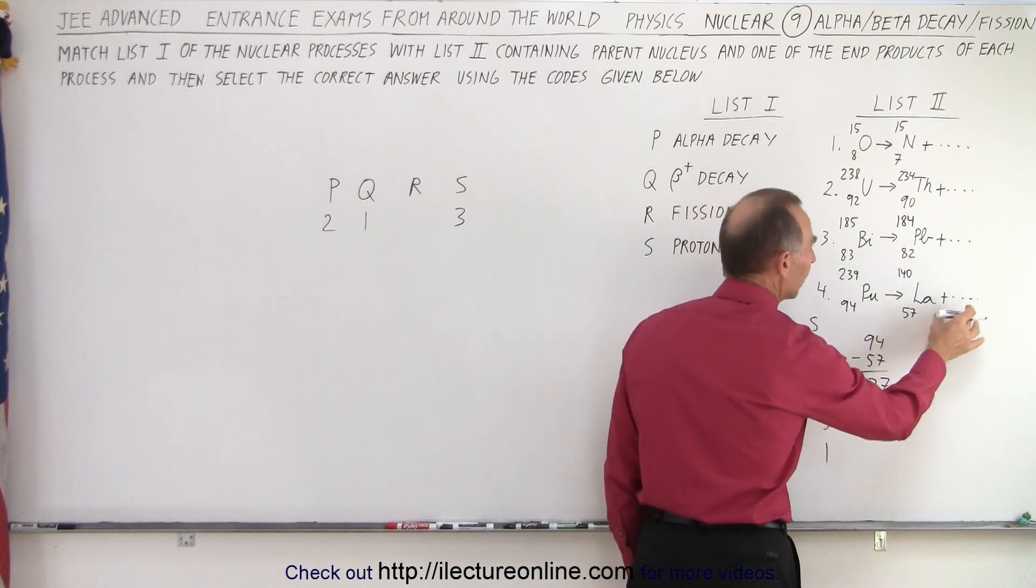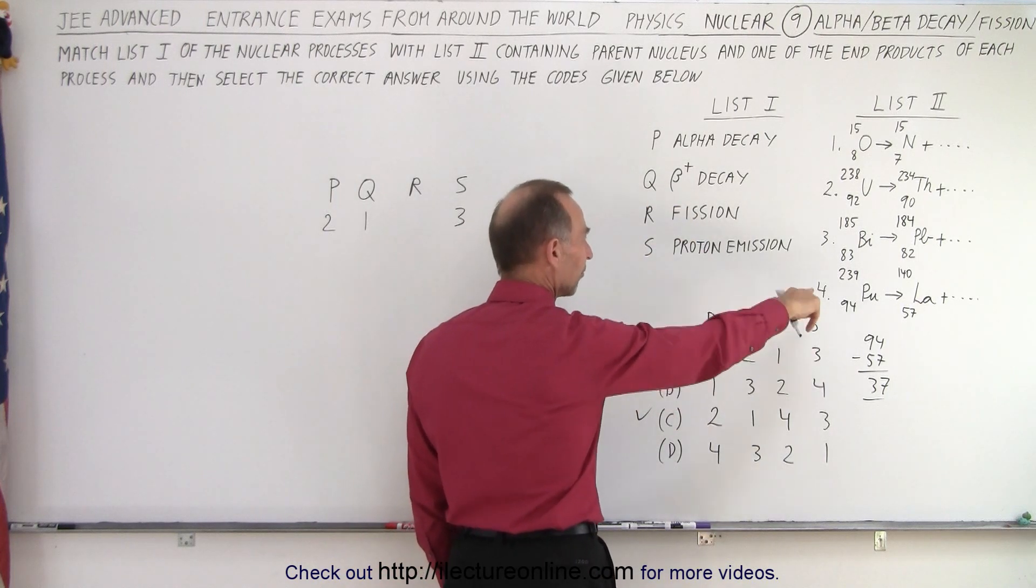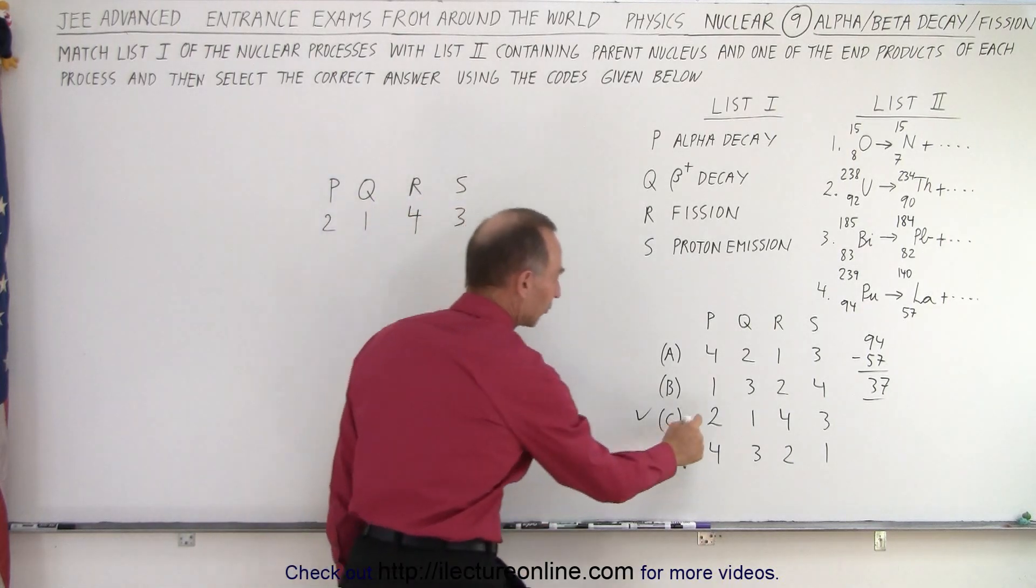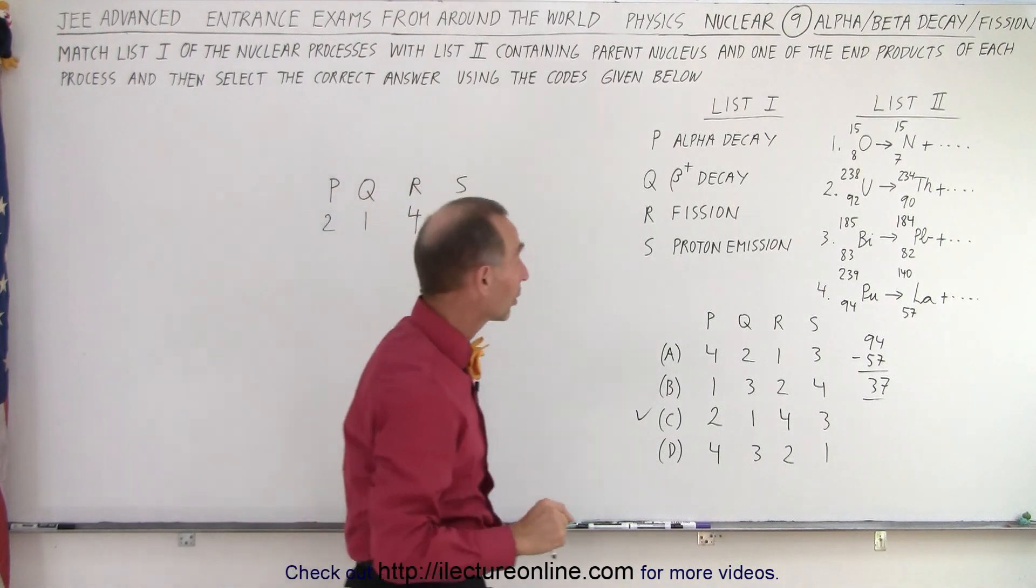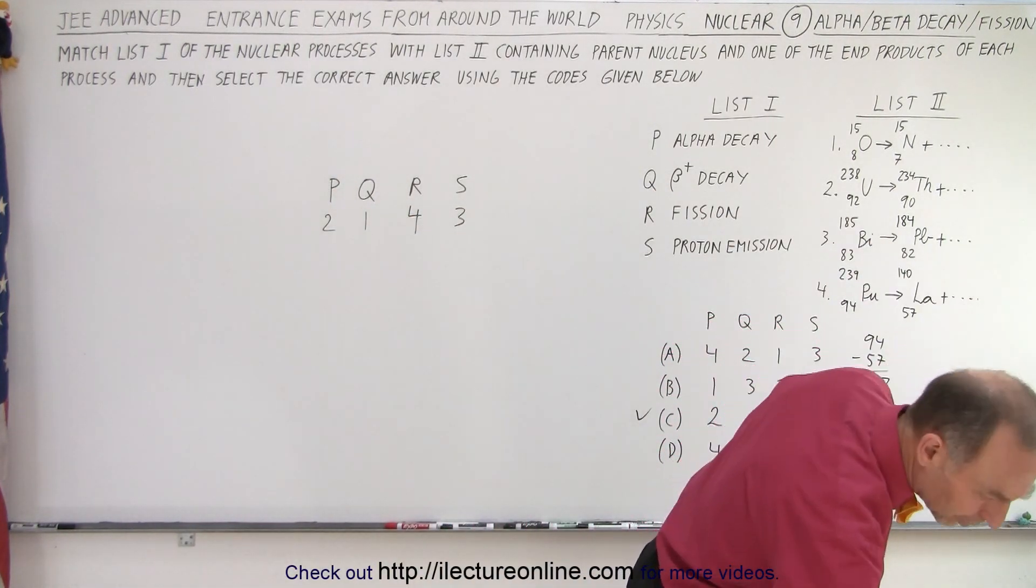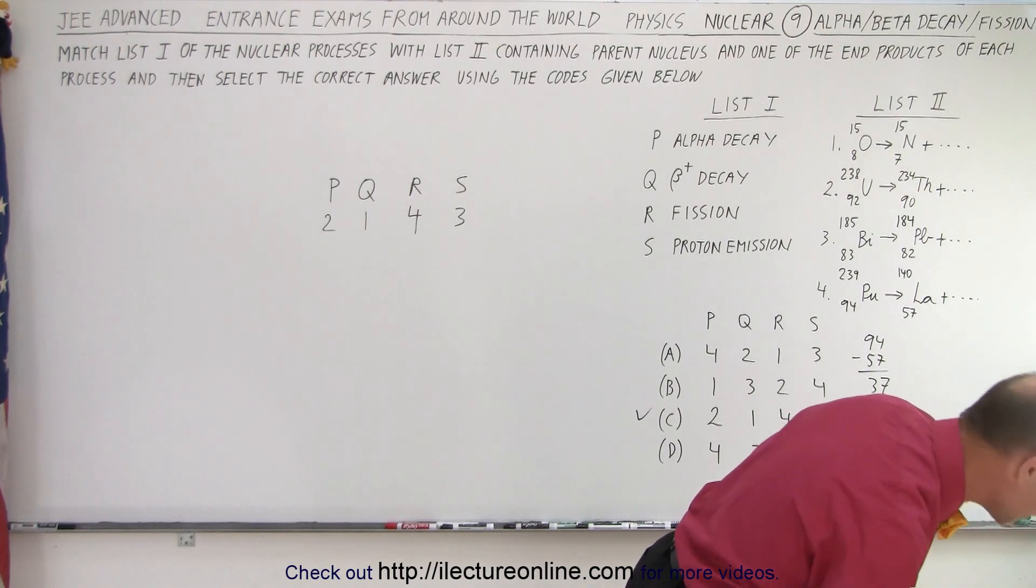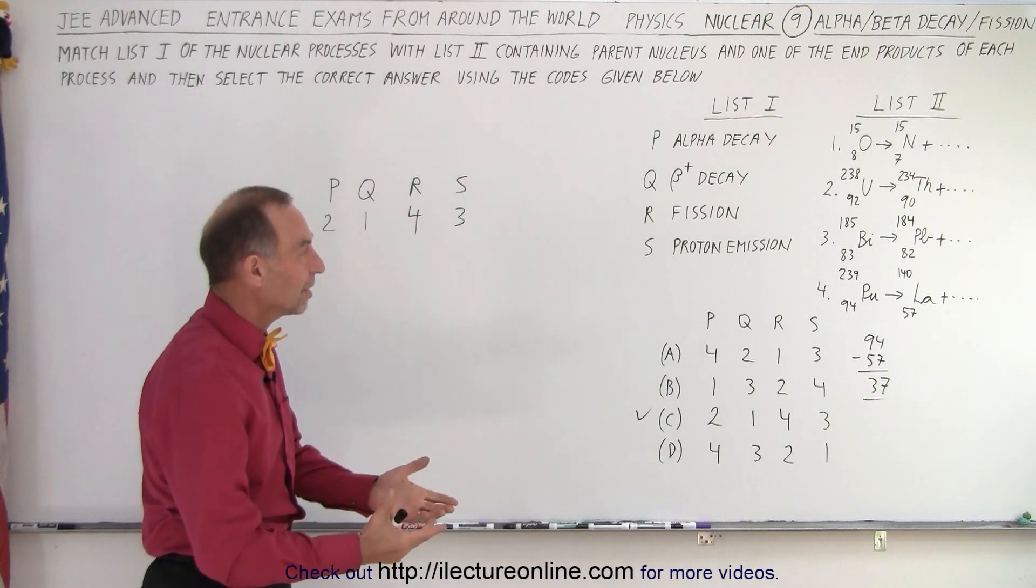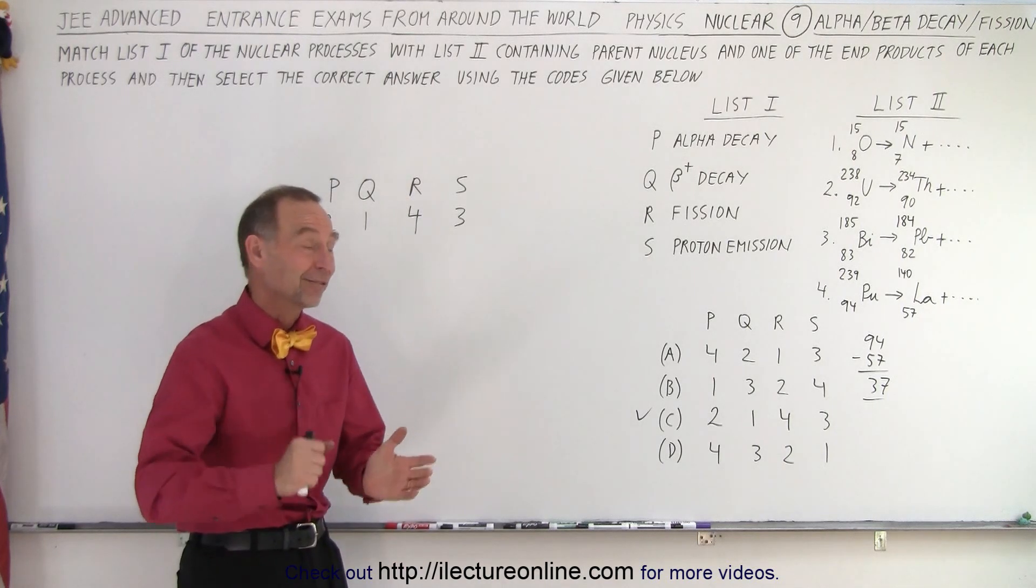We have a large nucleus being split up into two smaller nuclei and that would be 4 and R would be paired up and sure enough notice we have 2, 1, 4, 3. And just for the sake of argument let's go look up and see what 37 is. 37. What's 37? Okay. 37. Ah. It is rubidium. Okay. Alright. There we go. So it's lanthanum and rubidium is the fission daughter product of the fission reaction from plutonium and that is how it's done.